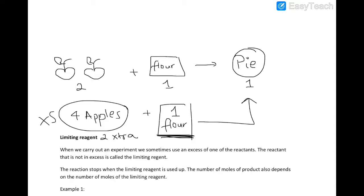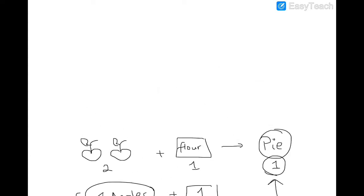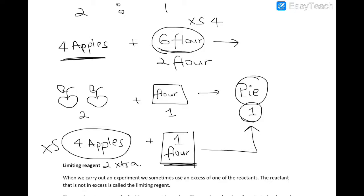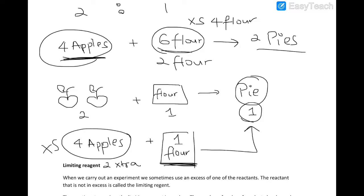Even if we had 100 apples and one pack of flour, we could still only make one pie. On the other hand, if we had four apples and six packs of flour — the ratio of apples to flour is 2:1 — four apples require only two packs of flour, leaving an excess of four packs. So we could only make two pies, and in this case the apples are limiting.